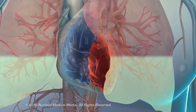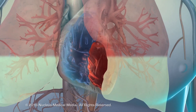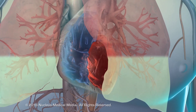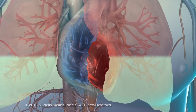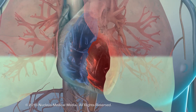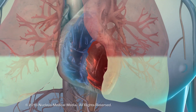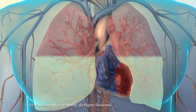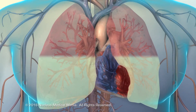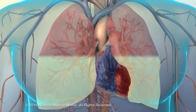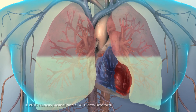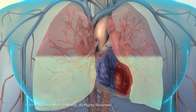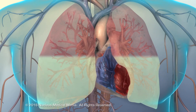The myocardium thickens as it labors to push blood out of the heart against the increasing pressure in the pulmonary vessels and fluid in the lungs, continuing the cycle of cardiac muscle damage.